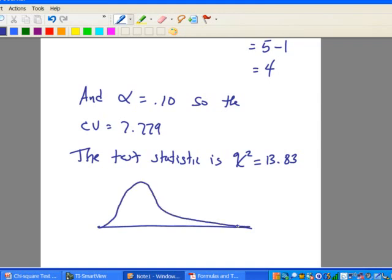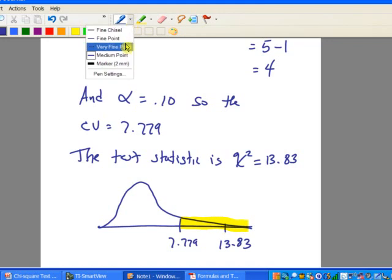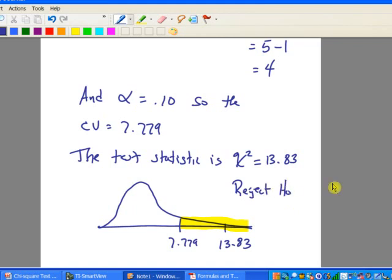Now all we want to do is to compare the critical value, it's here at 7.779, to our test statistic, 13.83. So notice here that it seems pretty clear that this critical region contains our test statistic. So it looks like, from looking at the problem here, we want to reject the null hypothesis.